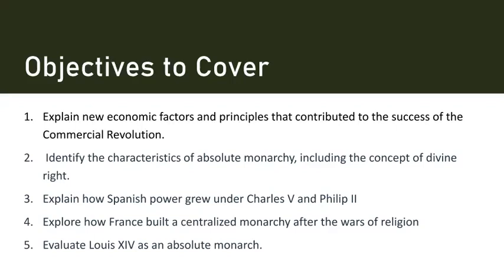Charles V, the Holy Roman Emperor, inherited an expansive empire that included Spain, the Netherlands, and parts of Italy and the Americas. His efforts to consolidate power set the stage for further Spanish expansion. Philip II, Charles V's son, continued this expansion and was known for his staunch Catholicism. The Spanish Empire grew to become the largest in the world.